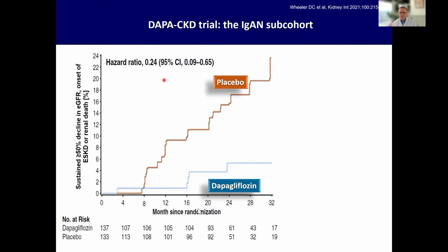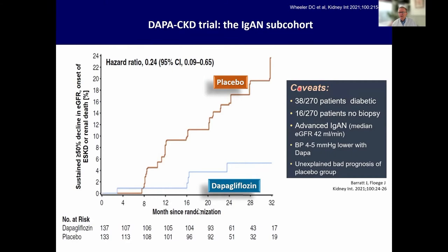John Barrett and I have written a fairly critical comment on this. There were diabetic patients included; 16 patients didn't even have a biopsy — I have no idea how you can diagnose IgA nephropathy without a biopsy. They were very advanced, had somewhat lower blood pressure — very consistently four to five millimeters mercury during the whole trial. The key question is that the placebo group really has an unexplained bad prognosis, much worse than you would ever be able to calculate with the risk calculator, and we are very concerned that supportive measures had been underused in this placebo group, including antihypertensive therapy.